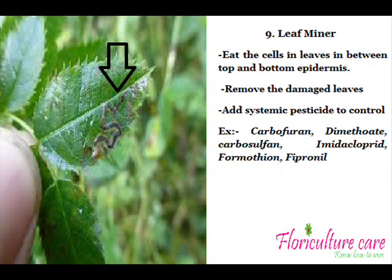Leaf Miner eats the cells in leaves between the top and bottom epidermis, creating paths that are visible on the leaves. Remove the damaged leaves or apply a systemic pesticide like Carbofuran, Dimethyloid, Carbosulfan, Imidacloprid, Formethan, and Fipronil to control them.